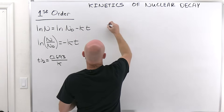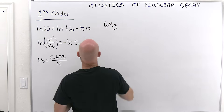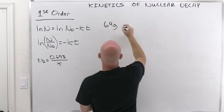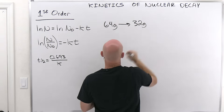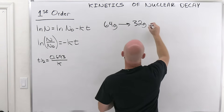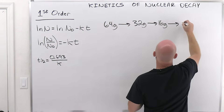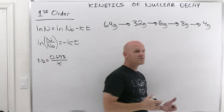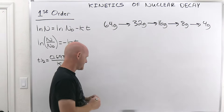Let's say we started off with 64 grams of a radioactive nuclide. After it decayed for one half-life, you'd have 32 grams left. After another half-life, you'd be down to 16 grams. Another half-life, down to 8 grams. Another half-life, down to 4 grams, and so on. You just keep dividing by 2, or multiplying by one-half, every half-life.